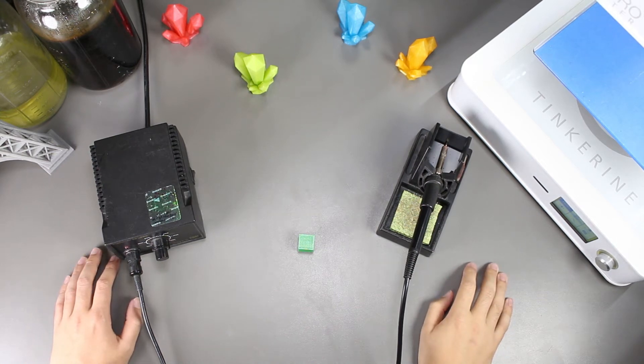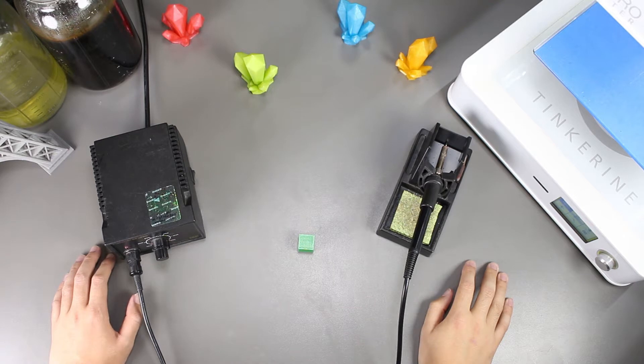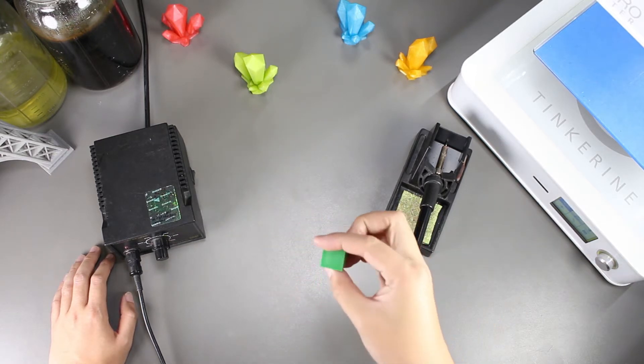Welcome to another episode of Tinkering Experiments. This episode will be a continuation of our last experiment and we'll be trying to smooth out our PLA print with a soldering iron.